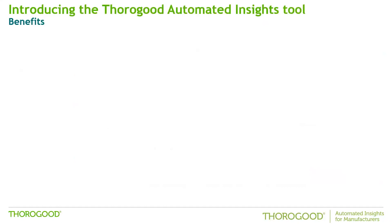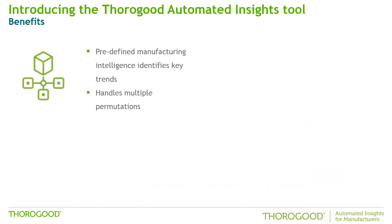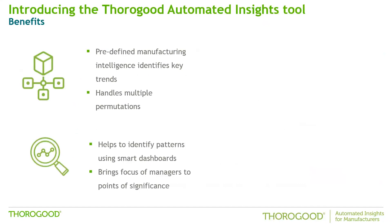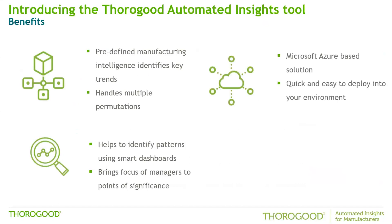This is where the Thorogood automated insights tool comes in. It provides a set of built-in algorithms that give you rapid answers to key questions such as: what are my top performers across my segments, what should I be concerned about that isn't performing well, and what are the opportunities for growth? It provides insights in an easy-to-consume way through smart dashboards, directing users to the trends and factors which are most significant — insights that may have previously been missed by pure human investigation.